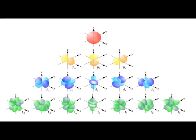Taking a careful look at this figure, we can see the M sub L quantum numbers. For P: negative one, zero, positive one. For D: negative two up to positive two. And for F: negative three up to positive three.